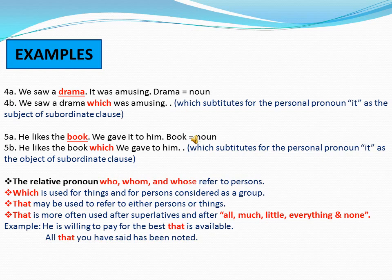Example four A: 'We saw a drama, it was amusing.' Here, 'drama' is a noun. In sentence four B: 'We saw a drama which was amusing.' So 'which' replaces 'it,' acting as the subject of the subordinate clause. Example five A: 'He likes the book, we gave it to him.' Here 'book' is a noun. In sentence five B: 'He likes the book which we gave to him.' So 'which' substitutes for 'it' as the object of the subordinate clause. 'Which' can be used as both subject and object.